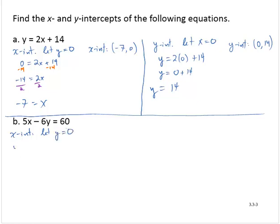So then I would have 5x minus 6 times 0 is equal to 60. 6 times 0 is 0, so I have 5x minus 0 is 60. And 5x minus 0 is 5x, so I have 5x equals 60.